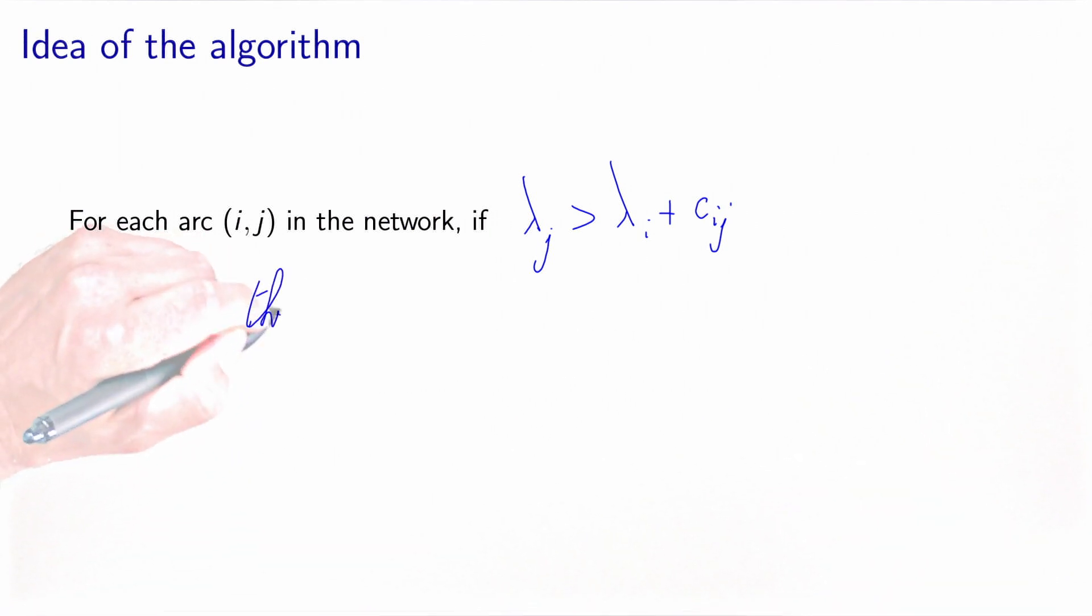In that case, we update the label of j to the value lambda i plus c_ij. That's the main idea of the algorithm.